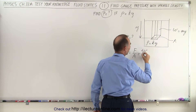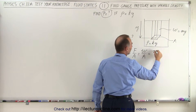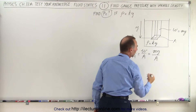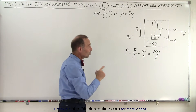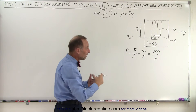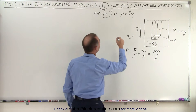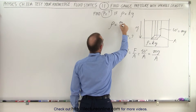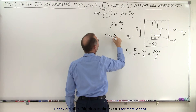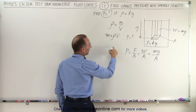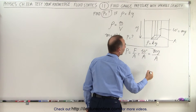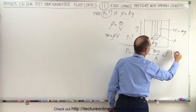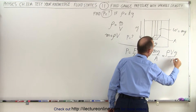The pressure equals the weight over the area. The weight equals mass times g, divided by the area. Now we need to convert that mass to density times volume of that column. By definition, density equals mass divided by volume, so mass equals density times volume. Substituting, this becomes density times volume times g, all divided by area.